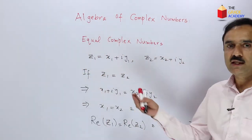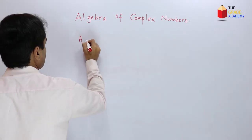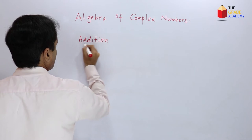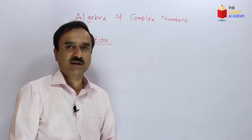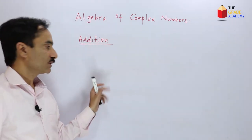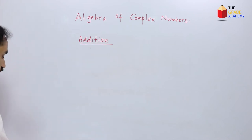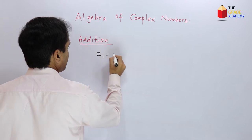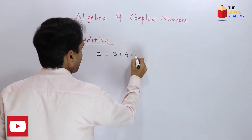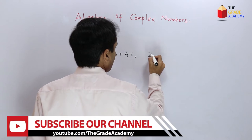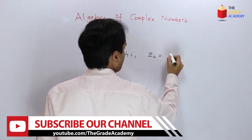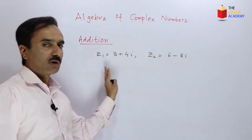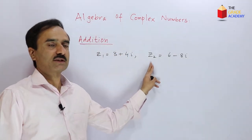Now let's discuss how we can add two complex numbers. Suppose we have two complex numbers: z1 equals 3 plus 4i and z2 equals 6 minus 8i, and we are going to add these two complex numbers.